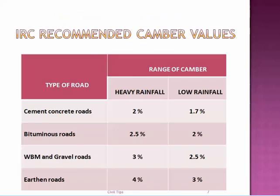IRC recommends camber values for various roads. For a cement concrete road in heavy rainfall conditions, a camber of 2% is used; in low rainfall conditions, 1.7%. For a bituminous road it is 2.5% for heavy rainfall areas and 2% for lower rainfall areas. For macadam roads and gravel roads it is 3% and 2.5% respectively. For earthen roads the value is higher — 4% in heavy rainfall areas and 3% in low rainfall areas.